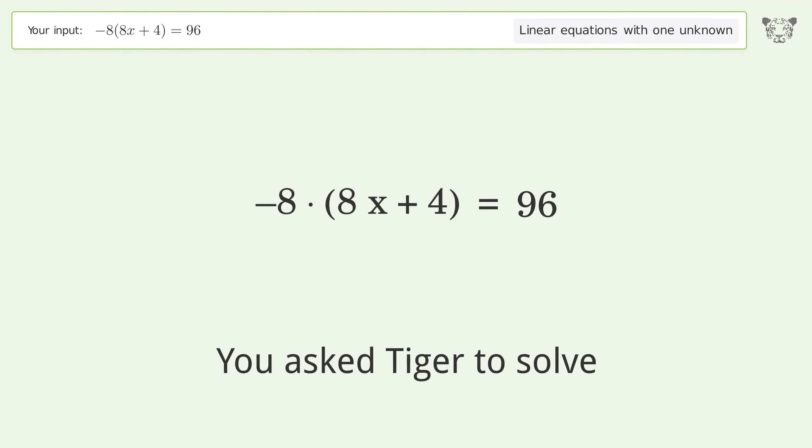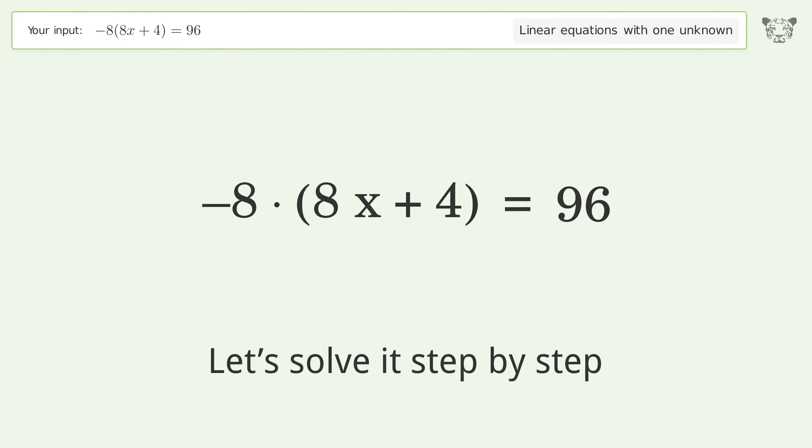You asked Tiger to solve this problem dealing with linear equations with one unknown. The final result is x equals negative 2. Let's solve it step by step, simplifying the expression.